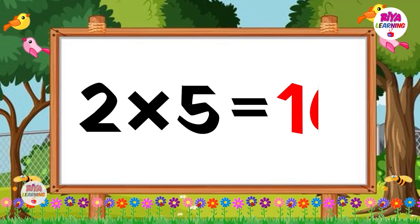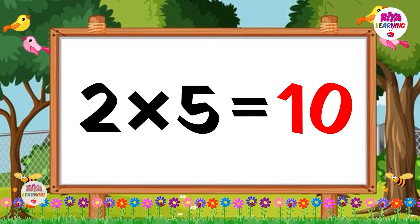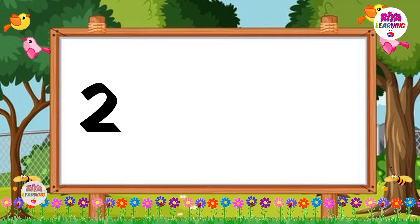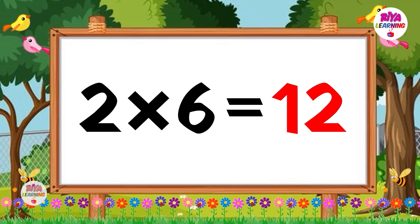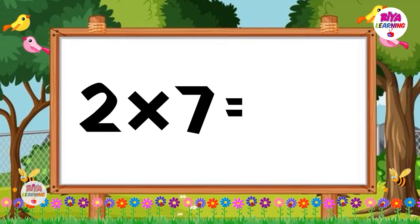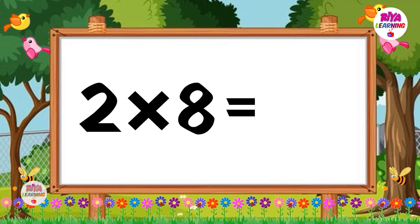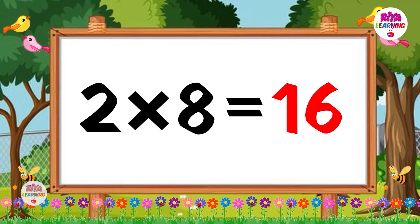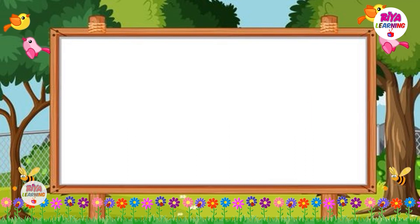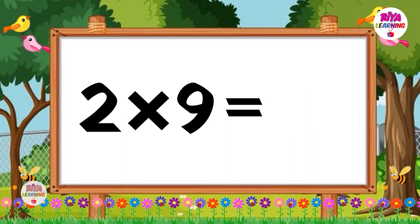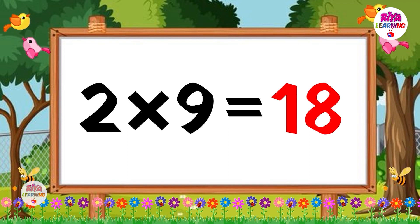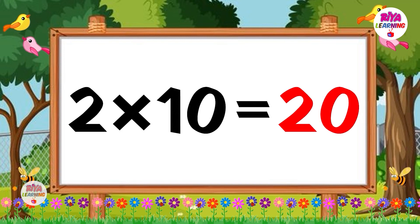Two fives are ten. Two sixes are twelve. Two sevens are fourteen. Two eights are sixteen. Two nines are eighteen. Two tens are twenty.